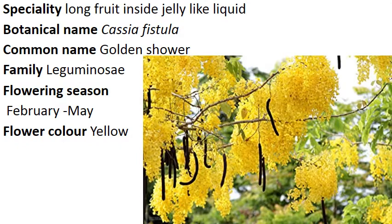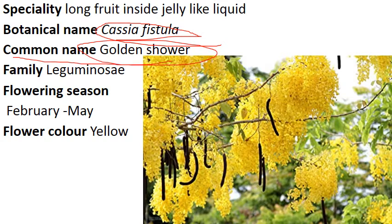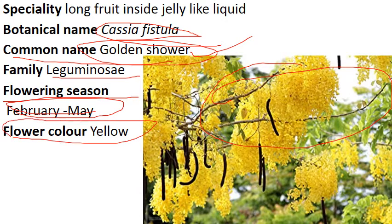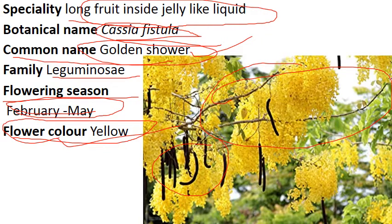Now comes to Cassia fistula. You might have seen it — it is found everywhere. Common name is Golden Shower, as the color is golden. Family is Leguminosae, Pea family. Flowering season is February to May, in the summer season. Flower color is yellow, just like gold. Special character: it has long fruit with a jelly-like liquid inside. You can see these fruits are very long, and inside you will find a jelly-like substance — it is very sticky, so don't cut that fruit.